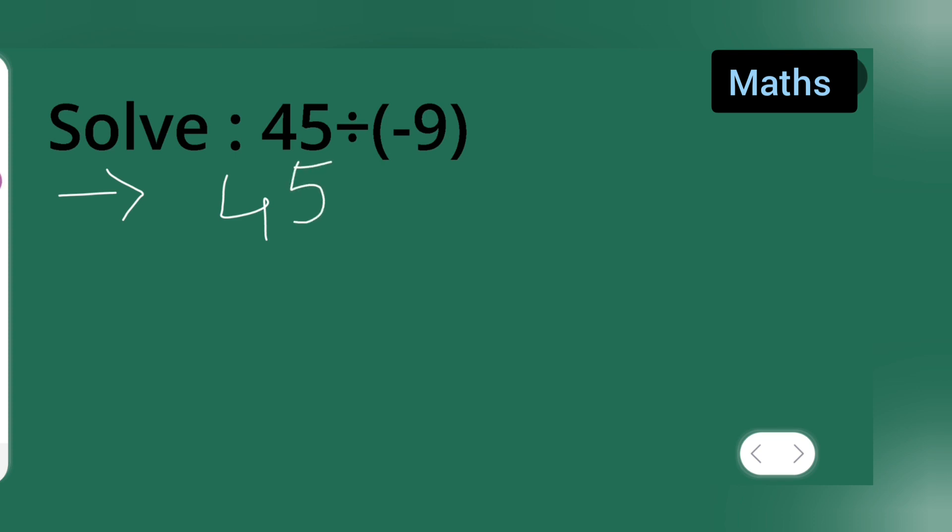45 multiply by minus 1 upon 9. Take the reciprocal of it, then you'll get this will be equal to minus 45 upon 9, right. And this is equal to 9 ones are 9, 9 fives...